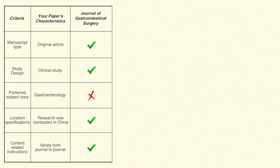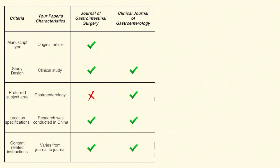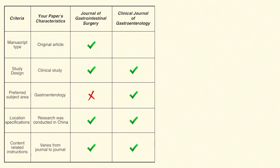Let's move on to the next journal — the Clinical Journal of Gastroenterology. This journal also publishes clinical studies, the preferred subject area is gastroenterology, there are no location specifications, and the content-related instructions also match. But there is a problem: this journal publishes only case reports and reviews, and yours is an original article. So this is a point of mismatch.